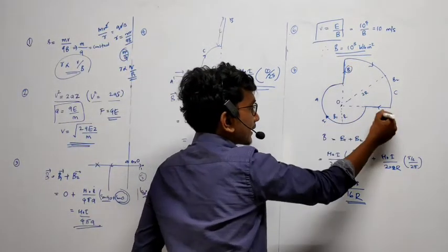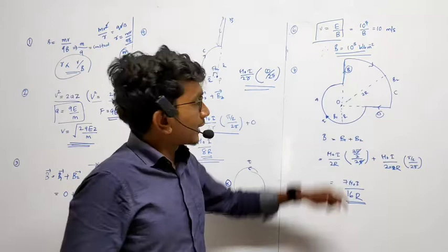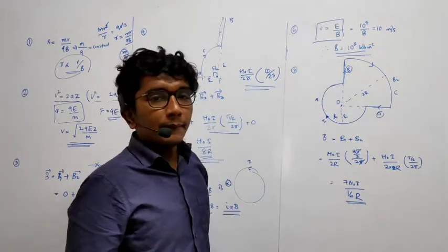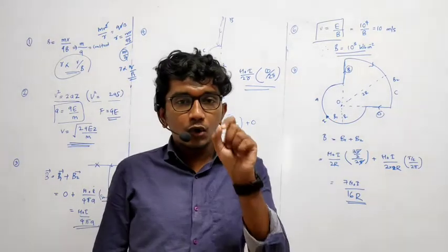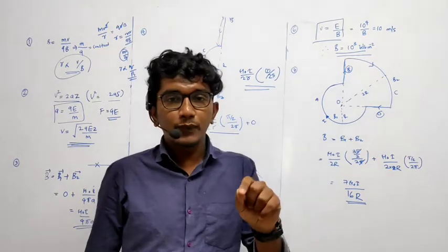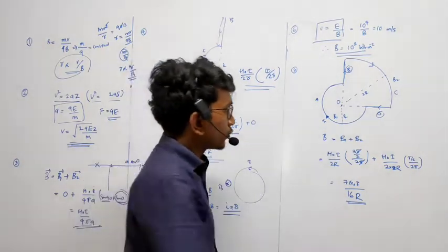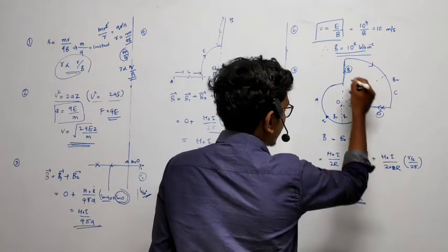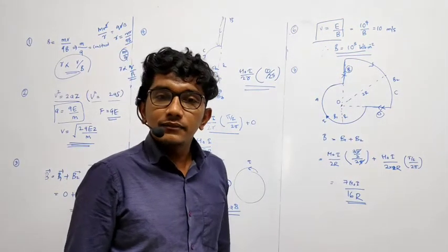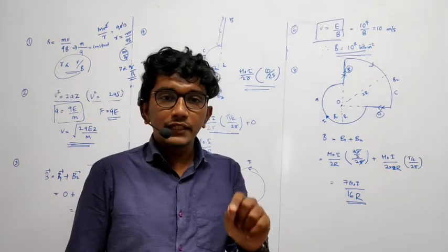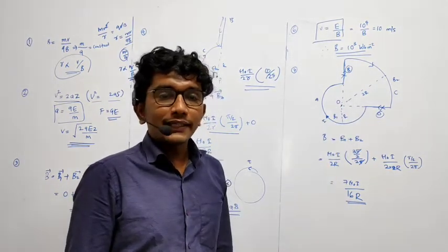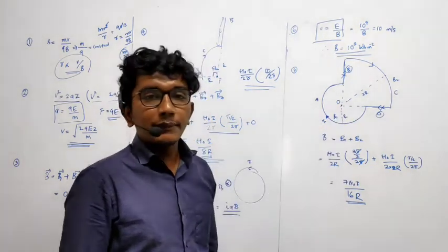One thing it is very sure is that conductor B and conductor D are not going to produce a magnetic field over here. Why? Because the point O is on the axis of B as well as D. So no magnetic field. Then what about the big circle? Yes, obviously it will produce a magnetic field over here. So I can say that the magnetic field at this point will be from the arc equation. Magnetic field produced by an arc.